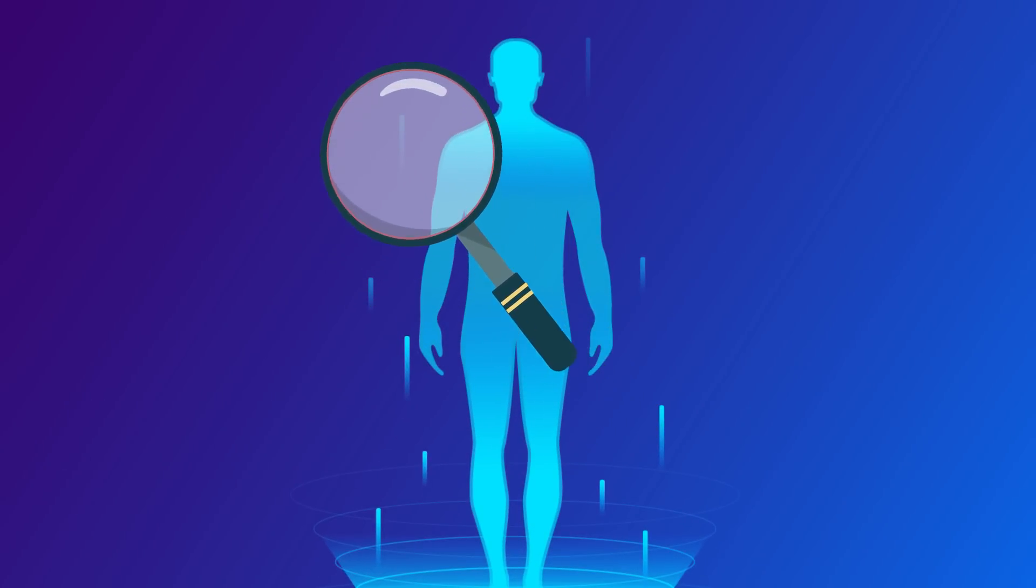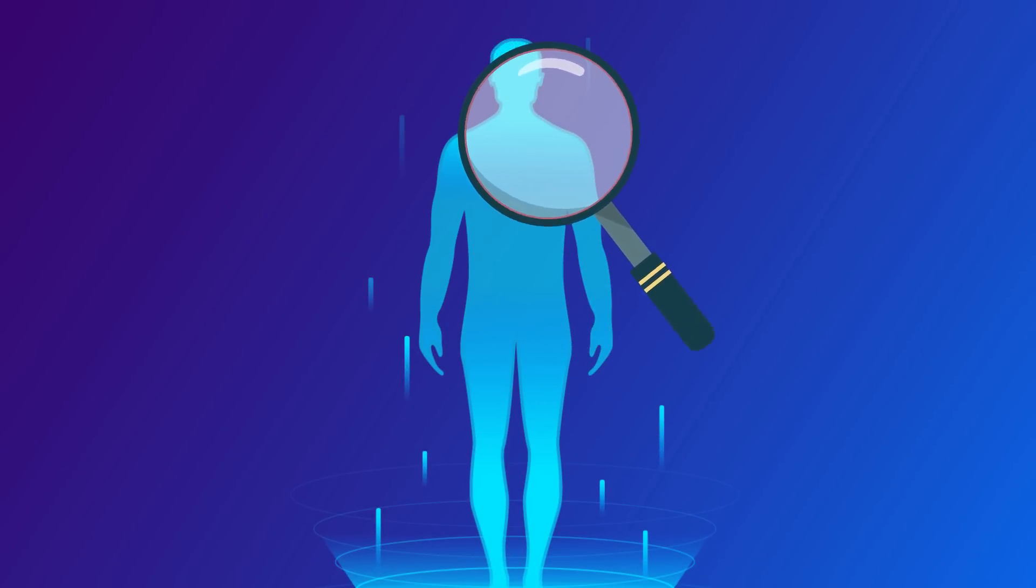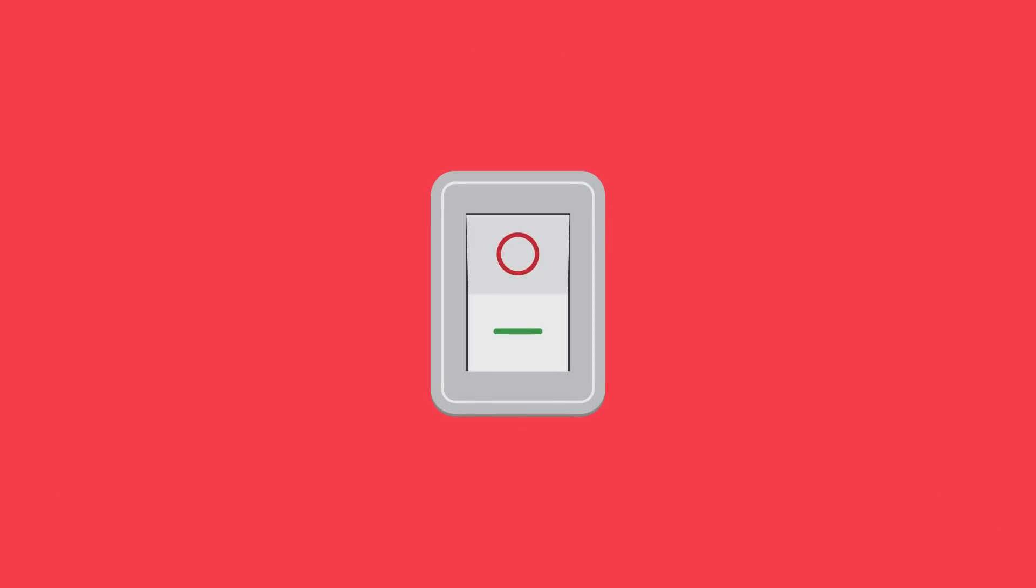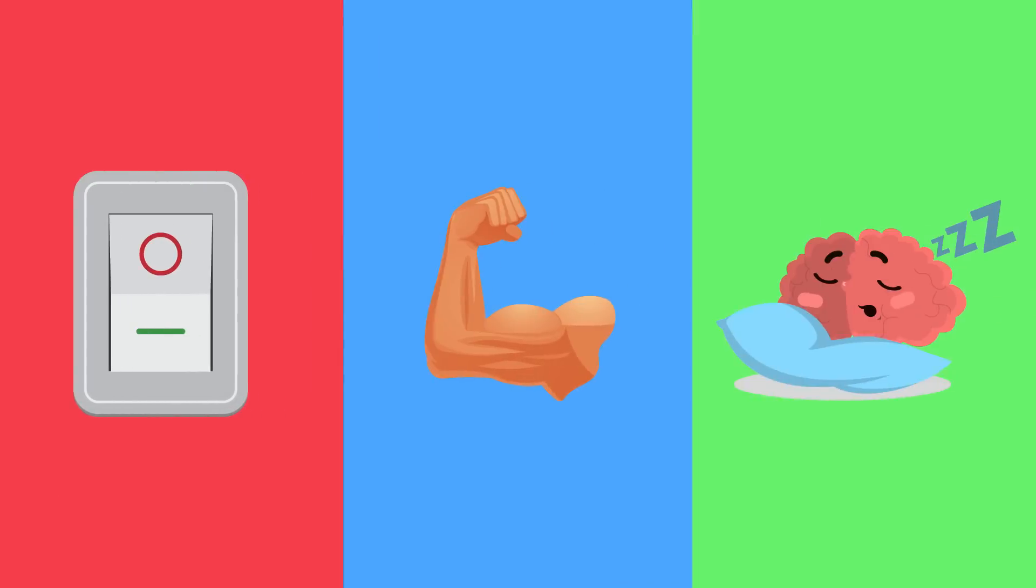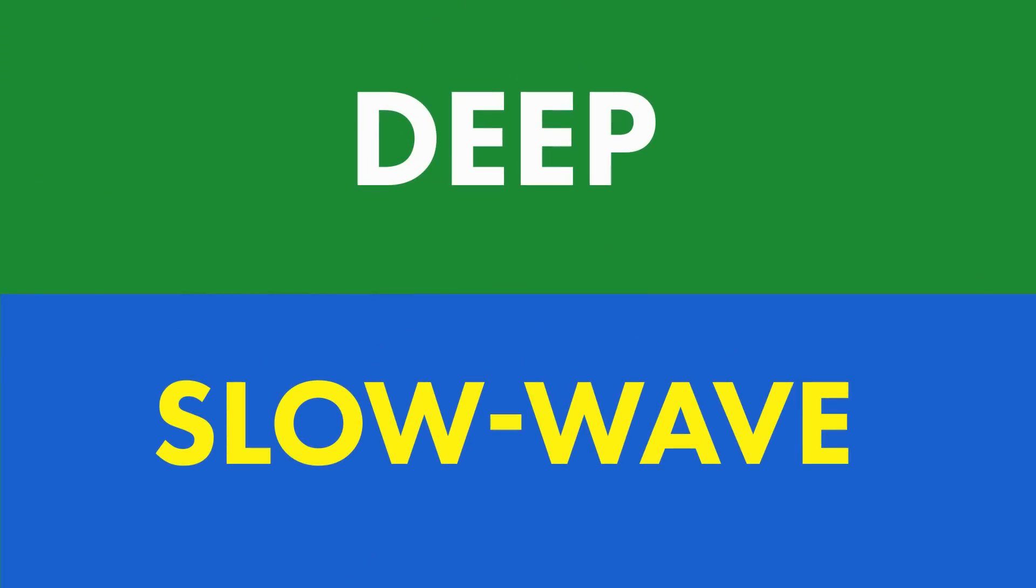Next, your body enters stage 2, also known as light sleep. Your senses shut down, your muscles relax, and your brain prepares for the most immersive stage of your sleep cycle, called deep or slow wave sleep.